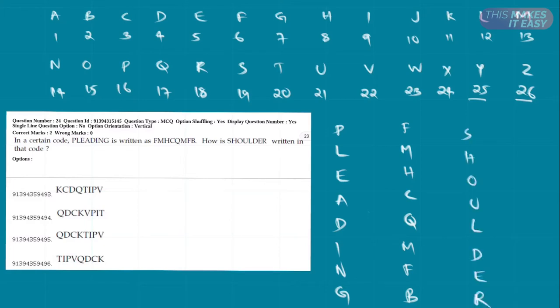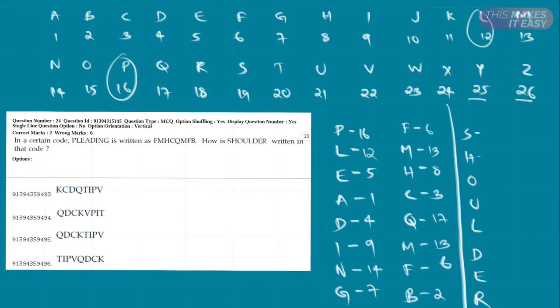First let's write the corresponding numerical value of each of these alphabets. P is basically 16, L is basically 12. In the same way we will write the numerical value for other alphabets. We will write the numerical value for SHOULDER as well. Now we have written the numerical values for all the words.